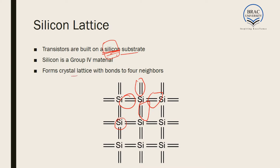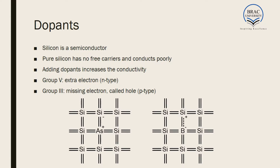Silicon is a group 4 material and it forms a crystal lattice with 4 neighboring silicon atoms. Silicon is a semiconductor — that is, it's between conductors and insulators. At room temperature, silicon acts as an insulator. At very high temperature, silicon can act as a conductor and can conduct electricity. But we do not want high temperature for operation, so what we do is we try to change the silicon lattice in such a way that it conducts electricity easily, and we can, one way or another, stop the conduction of electricity through it.